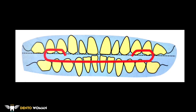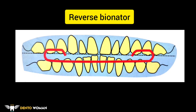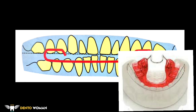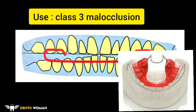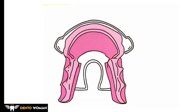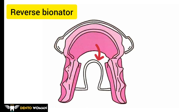This is the class 3 appliance or reverse bionator, used in cases of mandibular prognathism to encourage the development of the maxilla. The acrylic parts are similar to the standard appliance, but the palatal bar configuration runs forward instead of posteriorly. Note the labial bow running on lower anteriors instead of upper anteriors, and the reverse direction of the palatal loops — this indicates a reverse bionator.